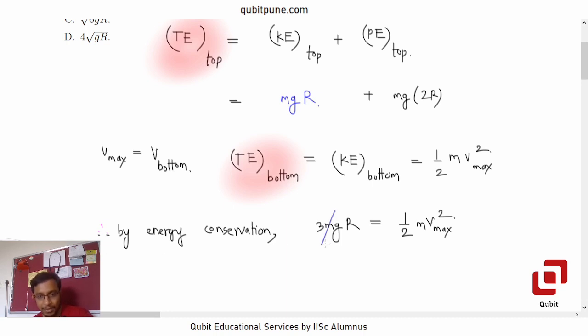Now we can cancel m, and v_max squared will be, 2 will go here, 6gR. Therefore v_max is equal to under root 6gR.